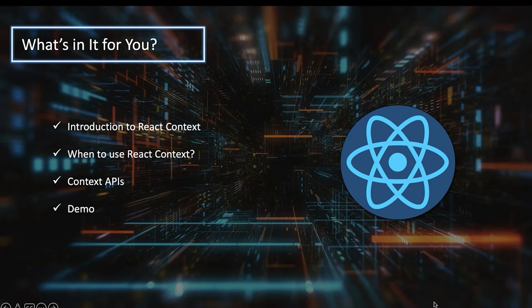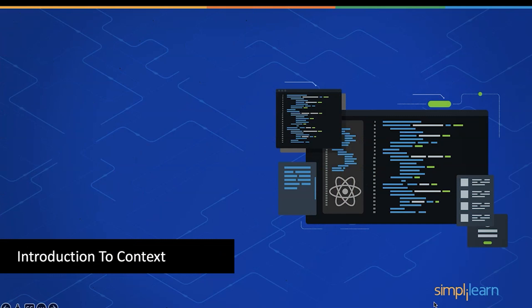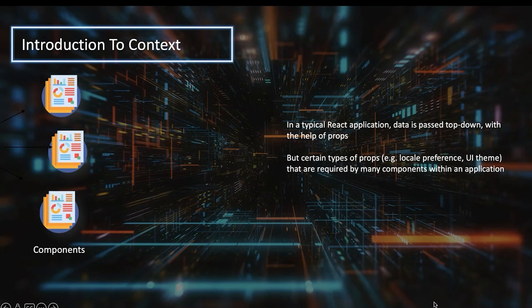The first question is: in an existing React application, where is the Context API really useful? In a typical React application, data is always passed top-down with the help of props. If you have components A, B, and C, and C wants to get data from A, A cannot directly pass data to C because C is a child of B and B is a child of A. Data has to be passed through the proper hierarchy — this is known as prop drilling, which becomes complicated when you have a complex hierarchy with many middlemen, creating confusion and making your application more complex.